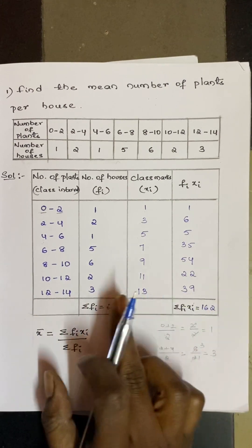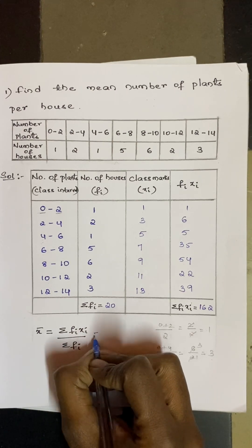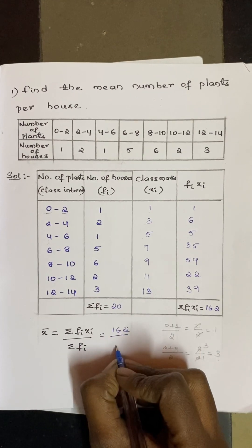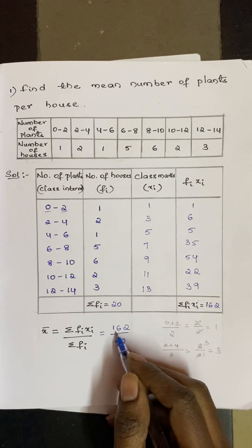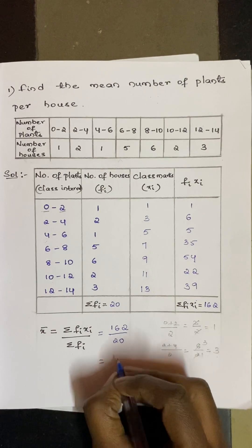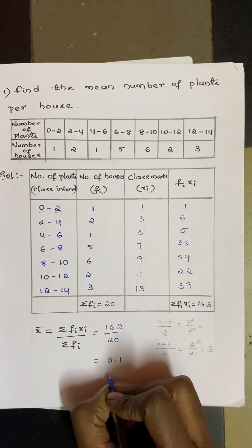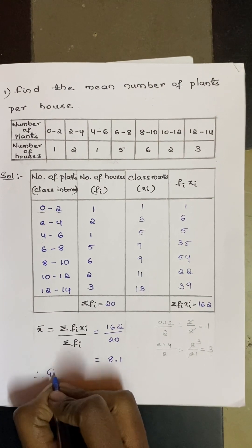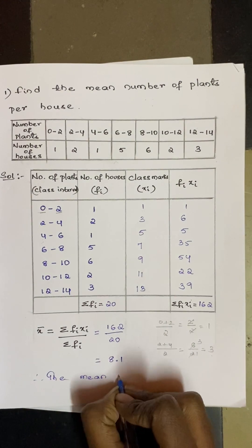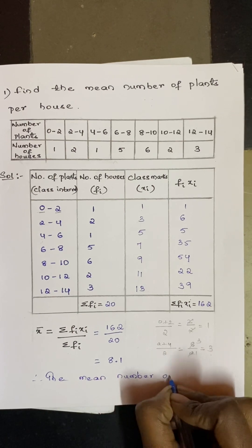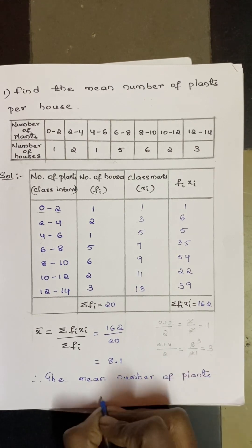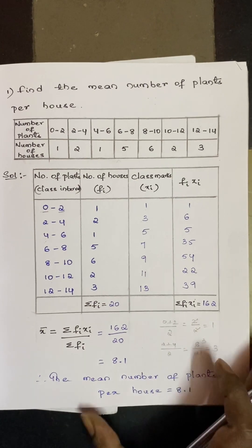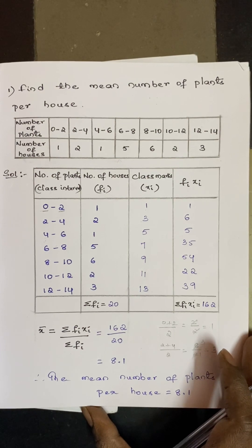Now I substitute these values into the formula: mean = Σfi·xi / Σfi = 162 / 20 = 8.1. Therefore, the mean number of plants per house is 8.1.